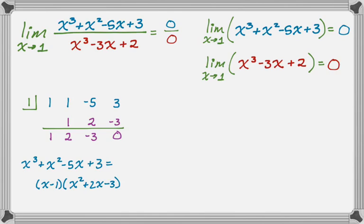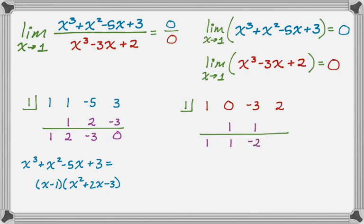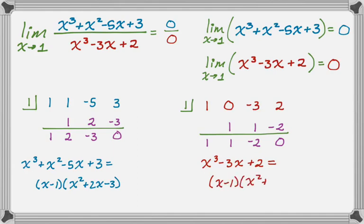Now let's do the same thing for the denominator. I put 1 in the box. The coefficients of x cubed minus 3x plus 2 are 1, 0 (for x squared), negative 3, and 2 — the zero is important to include. Drop down the 1, multiply to get 1, add to get 1, multiply to get 1, add to get negative 2, multiply to get negative 2, add to get 0. So the denominator x cubed minus 3x plus 2 factors into x minus 1 times x squared plus x minus 2.